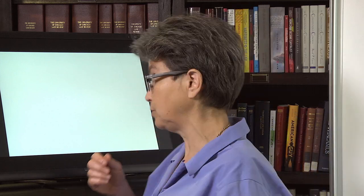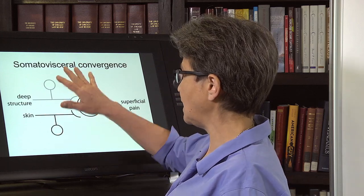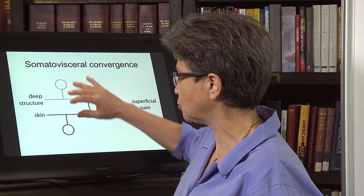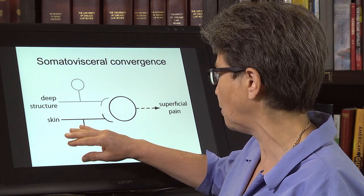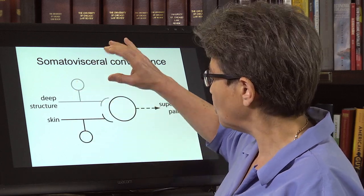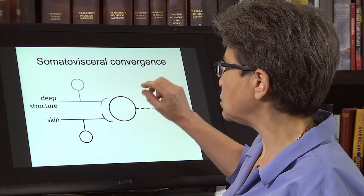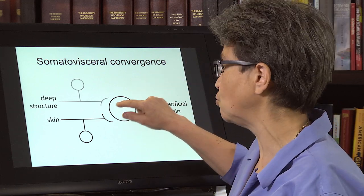To understand why that is, let's look at what's thought to be the mechanism for the poor localization of visceral pain. That is a convergence from a deep visceral structure and a more superficial structure — this can be skin, muscle, or bone — converging onto central neurons, which are neurons in the trigeminal nucleus or neurons in the dorsal horn.